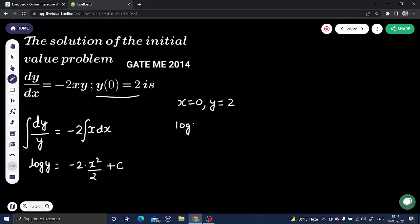y value we have 2. x=0, y=2. This equation, y to 2, log 2. Right hand side simplified version minus x square. x value 0. 0 plus c. Okay, here we can see c value is log 2.